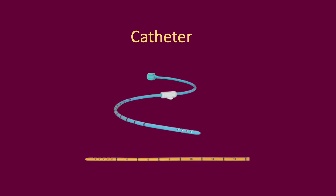A range of different EVD catheters have been described, the aim of which is to reduce the risk of intraventricular infection. Antibiotics can coat the catheter, in addition to silver, which has been shown to reduce the risk of infection.